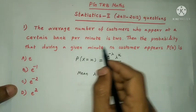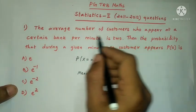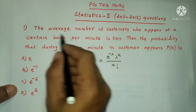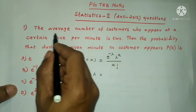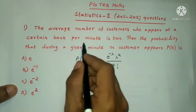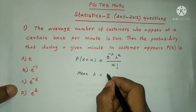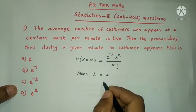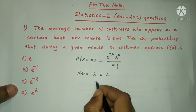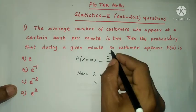So here, the average number of customers per minute is 2, that is λ = 2. Small x is equal to 0 — no customer.